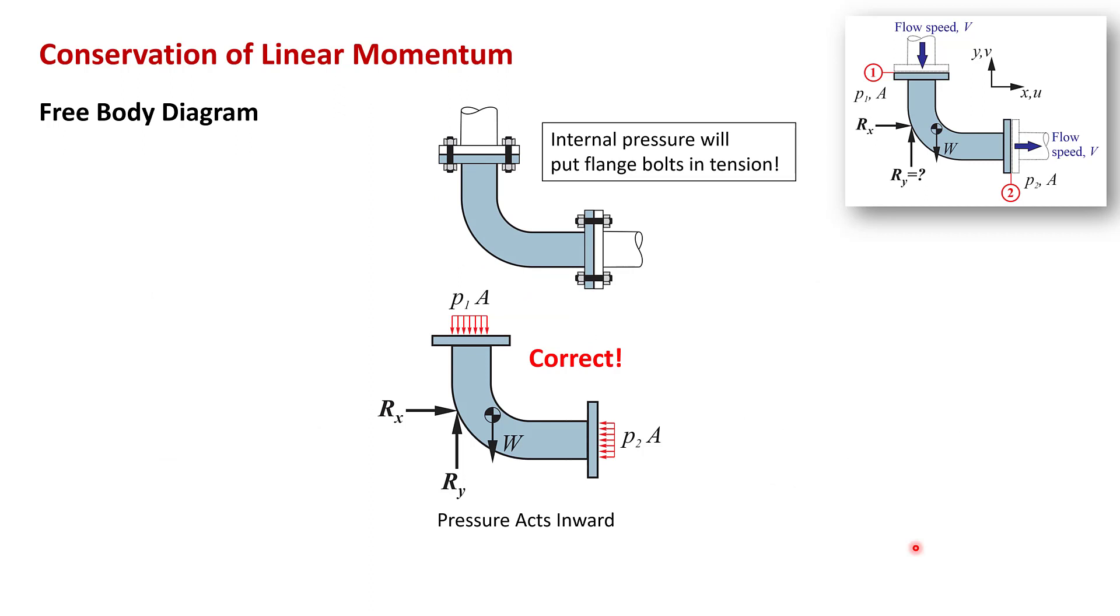The answer is that the pressure forces act inward and normal to the flanges as you learned in chapter two. I really urge you to try to have a physical feel for this. A positive gauge pressure would act to push the elbow off the flanges. So the bolts here would be in tension. It's like a pressure vessel. If the bolts failed, the elbow would blow off the pipe. So that kind of tells you the direction of the pressure forces on the elbow.